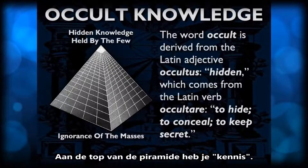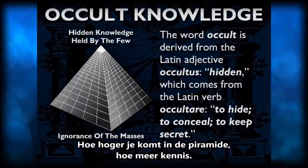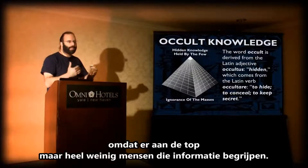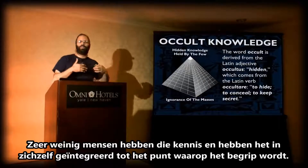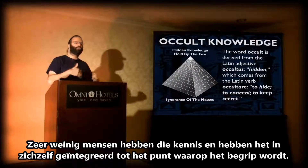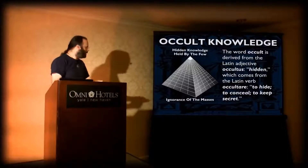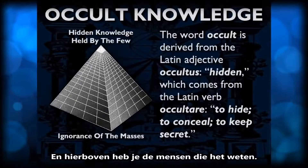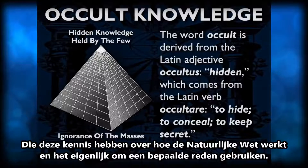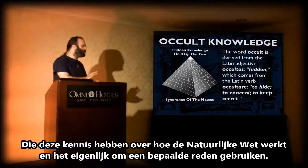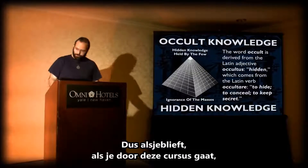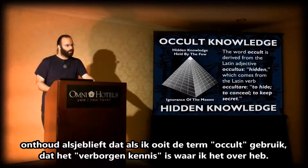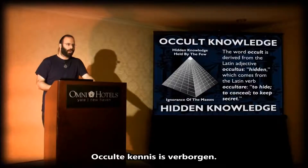At the top of the pyramid, you have knowledge — the higher you go in the pyramid, the more knowledge. But the pyramid tapers because at the top, very few people understand that information. Very few people have that knowledge and have actually integrated it into themselves to the point where it becomes understanding. Down here, you have no knowledge, the ignorant masses. Up here you have the people who are in the know, who have this knowledge about how natural law works and are actually using it for a certain reason. We're going to get to that next. So please, as you go through this seminar, keep in mind: if I ever use the term occult, all I'm talking about is hidden knowledge. That's what it means. Occulted knowledge is hidden.